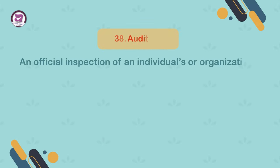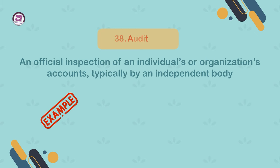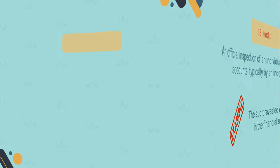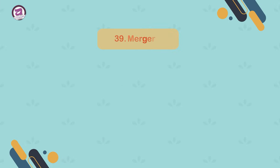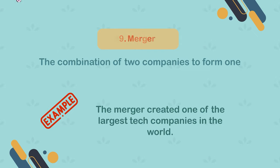38. Audit. An official inspection of an individual's or organization's accounts, typically by an independent body. Example: the audit revealed discrepancies in the financial statements. 39. Merger. The combination of two companies to form one. Example: the merger created one of the largest tech companies in the world.